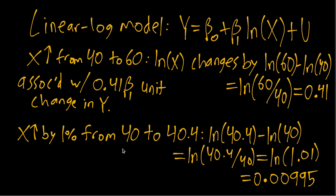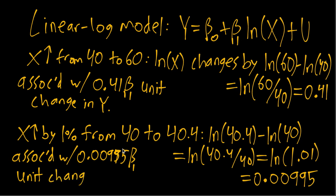So then in this case, this 1% change in X is associated with a 0.00995, it's a very good approximation, beta 1 unit change in Y, which is approximately a 0.01 beta 1 increase in Y.